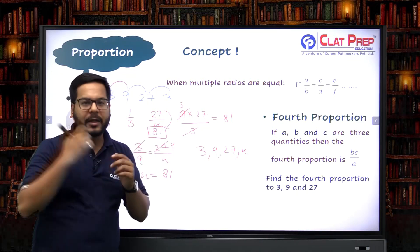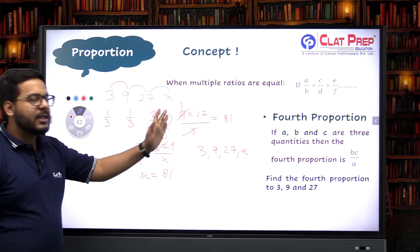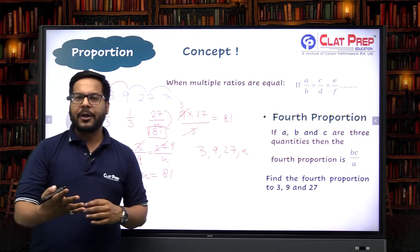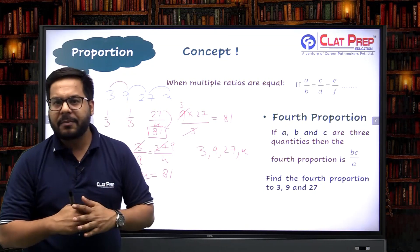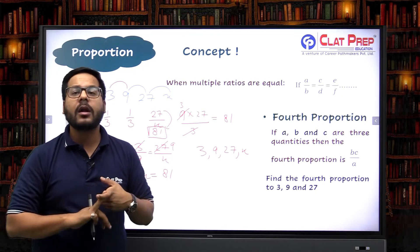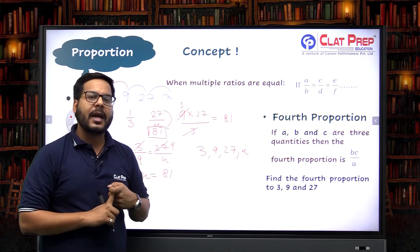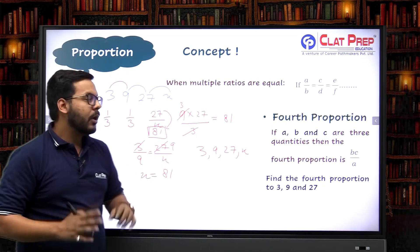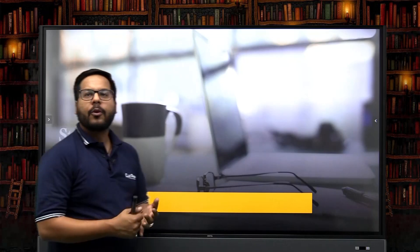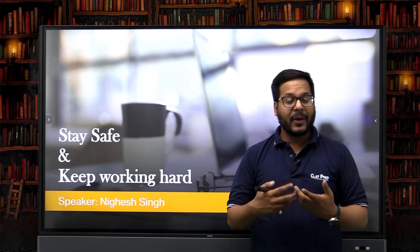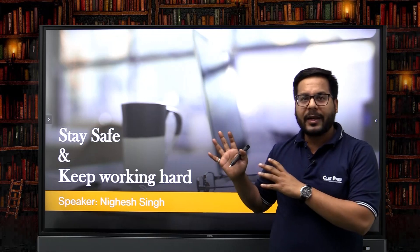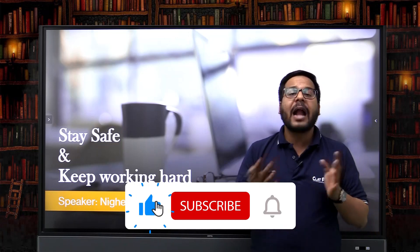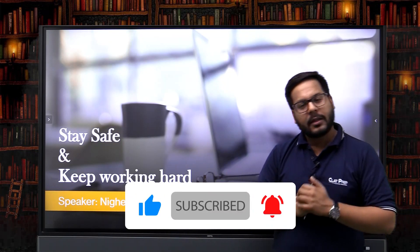So to summarize: simple proportion has one key property — product of extremes equals product of means. Continued proportion has three parts: mean proportion, third proportion, and fourth proportion. I hope this video helped you understand the concept. In the upcoming video, we'll solve traditional questions based on proportion and variation. Thank you so much.